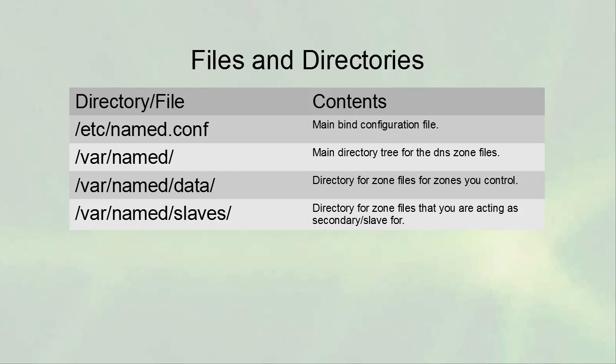The zone data is normally stored in the /var/named directory. /var/named/data would hold all the zones you control, and /var/named/slaves holds all the zones you're acting as secondary or slave for — those are zones you get from somebody else. There is a push to rename things, so words like 'master' and 'slave' may start to disappear due to their negative connotation, possibly replaced with 'secondary' or something similar.